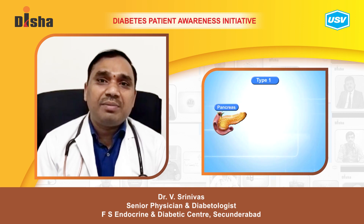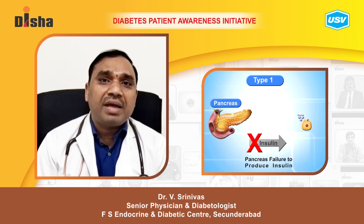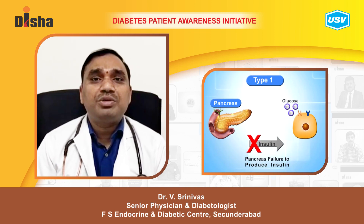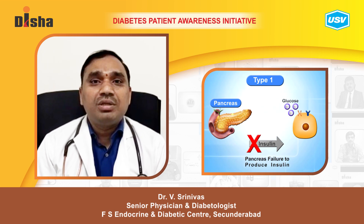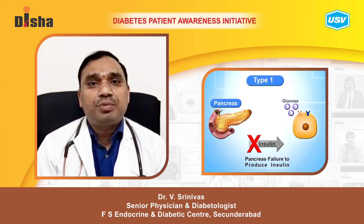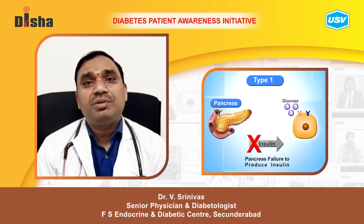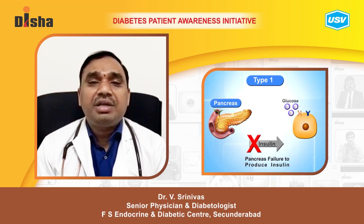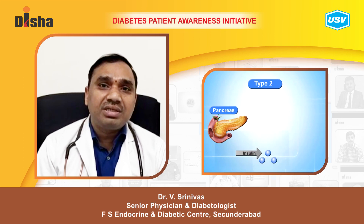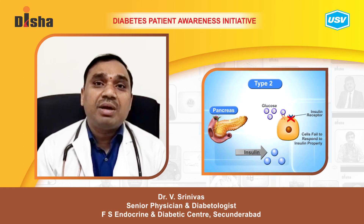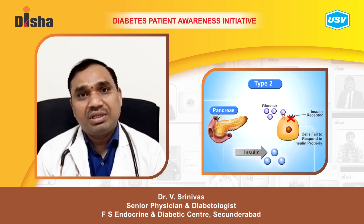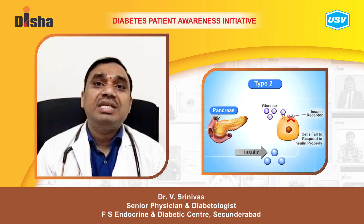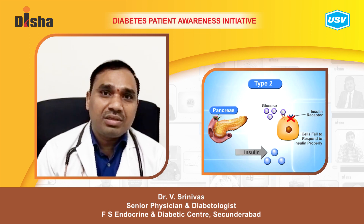In type 1 diabetes, the pancreas is not able to produce enough insulin — sometimes almost zero insulin — so there is no insulin to push glucose into the cells. In type 2 diabetes, sometimes there is abundant insulin but it is not able to act on peripheral tissues, which is called insulin resistance.